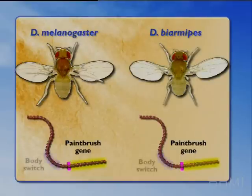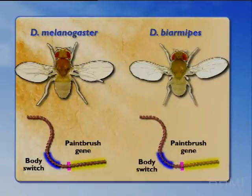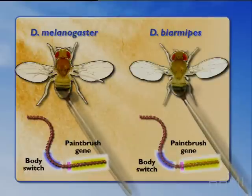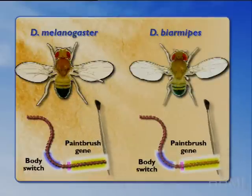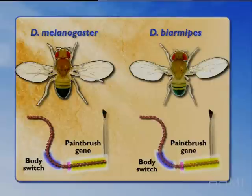There are switches for this paintbrush gene that govern how it's used in the body. Both animals' genomes contain these switches, and these switches govern the use of this paintbrush gene to fill in the color on the abdomen of the fruit fly.